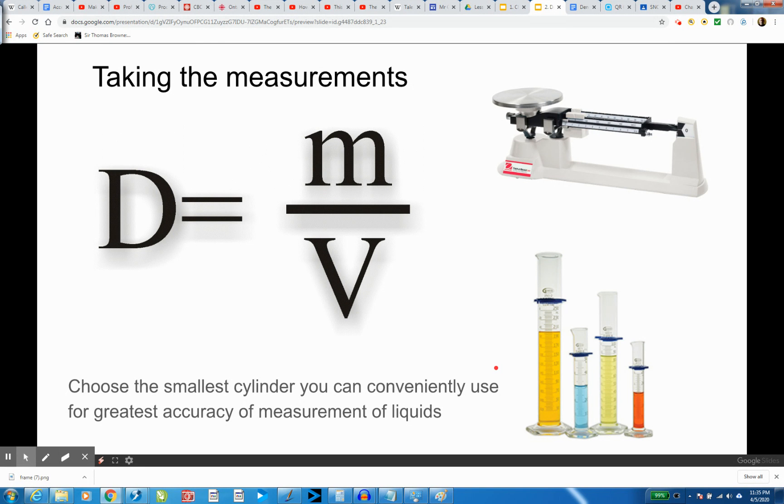When we're going to take the measurement, you can use a balance for the mass and a graduated cylinder for liquids. If they're solids, you're going to need a ruler to actually measure them, and you will choose the graduated cylinder that best suits the role. The smaller, the better. You get more precision.